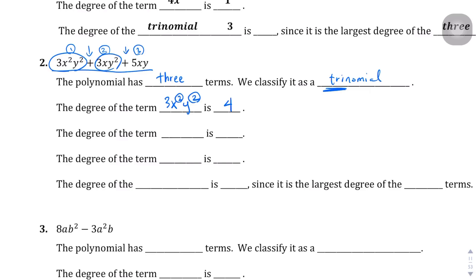For the second term, 3xy², the degree is three. The x technically has an exponent of one — we don't write it because that's redundant — and one plus two is three. The third term, 5xy, has a degree of two because x has degree one and y has degree one, and one plus one equals two.